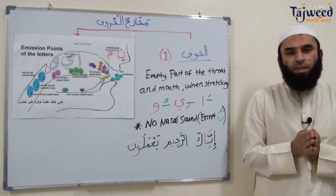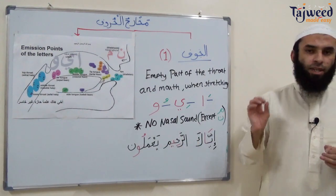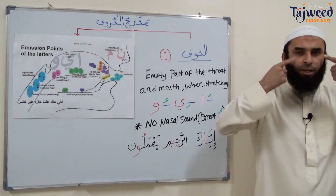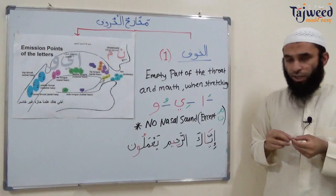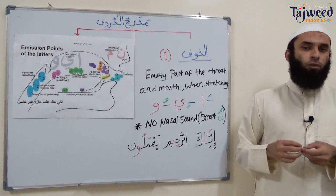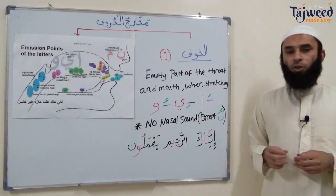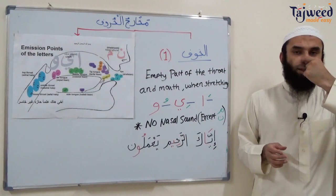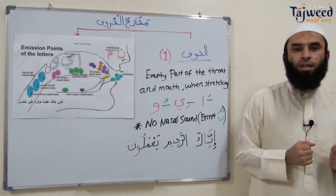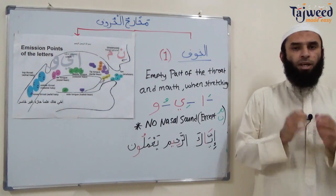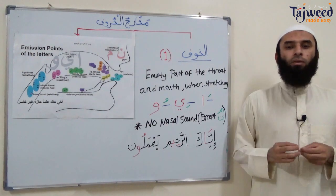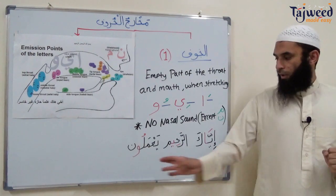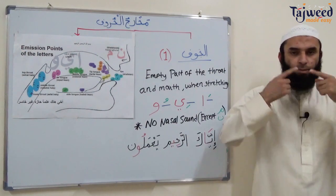An important note: a common mistake people make is putting a nasalization sound other than with مِيم. There should be no nasalization sound other than مِيم and نُون — only they have a natural sound from the nose. So if we're stretching إِيَّاكَ and we produce a nasalization sound, we're not doing it properly. إِيَّاكَ — no nasalization sound. If I say إِيَّاكَ with a nasal sound, then I'm producing a mistake. Likewise الرَّحِيم — not الرَّحِيم with nasalization — and يَعْمَلُون should have no nasalization sound.